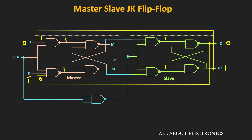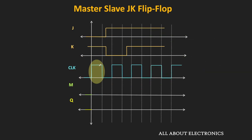Initially, let's say the Q output of the latch is 0 and Q-bar is 1, with J=0 and K=1. Due to feedback, Q appears at one NAND gate input and Q-bar at the other. Since one input of both NAND gates is 0, both outputs become 1, so M output remains 0 and M-bar remains 1. This is the expected result — for the JK flip flop when J=0 and K=1, the output should be 0. In the timing diagram, during the on-time of the clock, the M output remains 0.